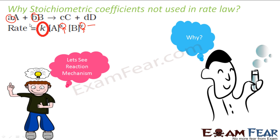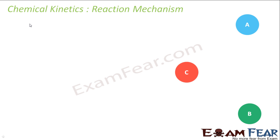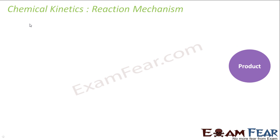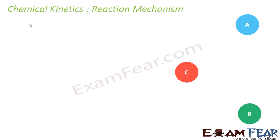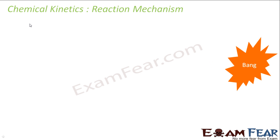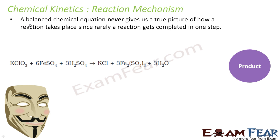One chemist came up with the idea to look at the reaction mechanism — to see what actually happens. When the chemists examined the reaction mechanism, they found that generally in a reaction, one, two, or three molecules react and combine, they collide and form a product.